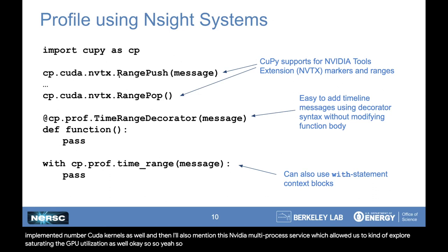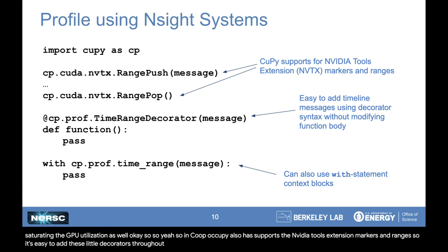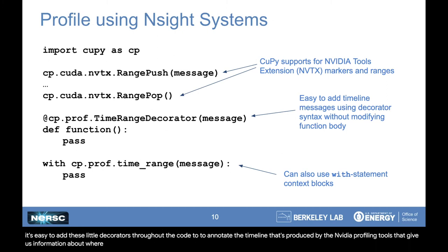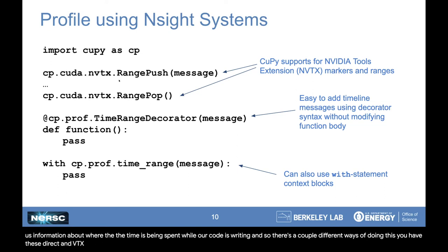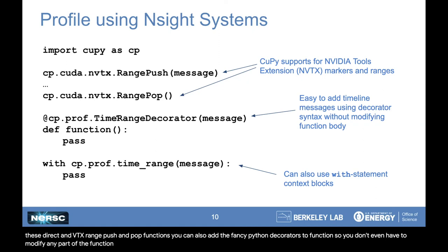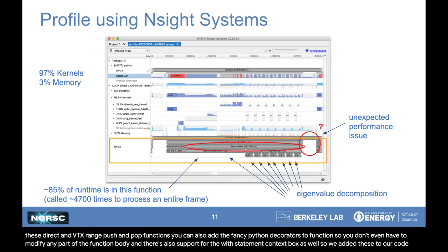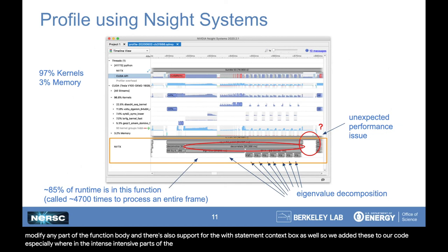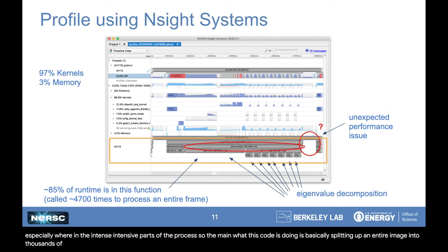CuPy supports the NVIDIA Tools Extension markers and ranges, so it's easy to add decorators throughout the code to annotate the timeline produced by the NVIDIA profiling tools. There are a couple different ways of doing this: you have the direct NVTX range push and pop functions, you can also add Python decorators to functions so you don't even have to modify any part of the function body, and there's also support for the with-statement context manager. We added these to our code, especially in the intensive parts of the process. What this code is doing is basically splitting up an entire image into thousands of sub-images and processing each one separately — this was the strategy employed on the CPU to leverage parallelism and divide the task into lots of small bits.